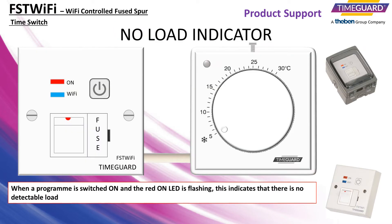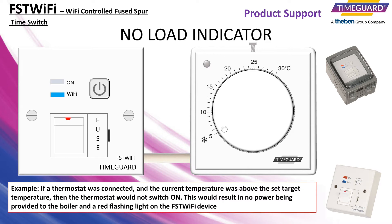When a program is switched on and the red-on LED is flashing, this indicates that there is no detectable load. If a thermostat was connected and the current temperature was above the set target temperature, then the thermostat would not switch on. This would result in no power being provided to the boiler and a red flashing light on the FST Wi-Fi device.